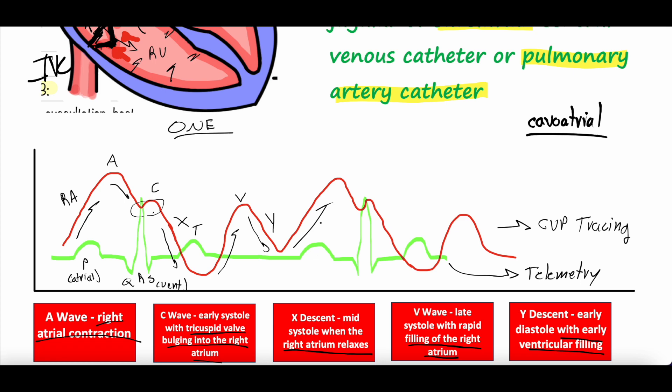That is a normal CVP tracing. Definitely let us know your thoughts, questions, and comments down below — it certainly is confusing. On our Patreon page we'll post some practice questions intermittently. We're also going to cover abnormal CVP tracings in future videos, so check those out — we'll link them in the description once they're released. We hope this provided some additional insight. Hopefully next time you see a CVP tracing on a monitor you can picture that cardiac activity. We appreciate you all — stay well, keep learning, we'll see you next time.